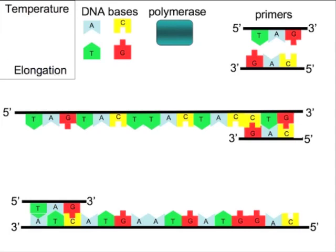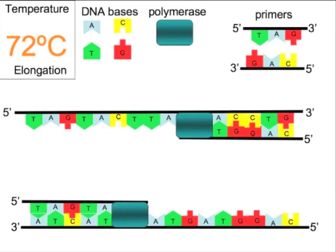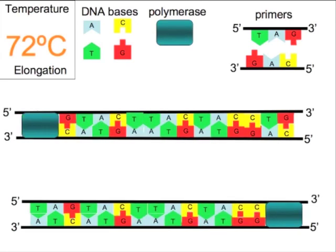We now enter the final step elongation. In this step we raise the temperature to 72 degrees which allows the polymerase to recognize the primers bound to the single-stranded DNA. The polymerase binds and begins moving down the existing strand of DNA always adding the complementary base to the three prime end of the growing DNA strand. So as the polymerase comes off as it reaches the end of the strand we now have two complete double-stranded DNA molecules from what was just one double-stranded DNA molecule before.